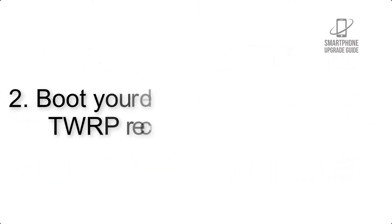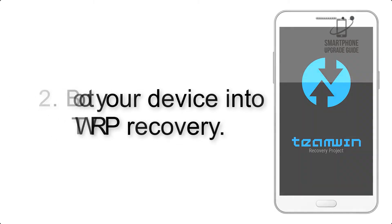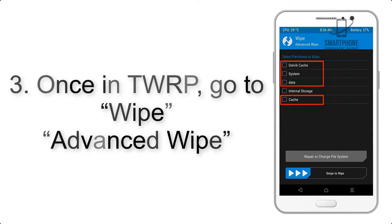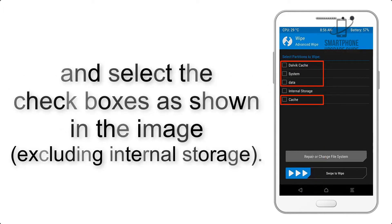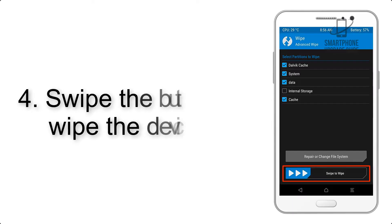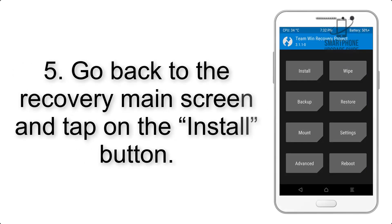Step 2: Boot your device into TWRP recovery. Once in TWRP, click on Wipe, then Advanced Wipe, and select the checkboxes as shown in the image, excluding internal storage. Step 4: Swipe the button to wipe the device.